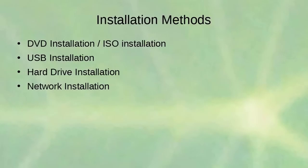There are several installation methods. A DVD installation is typical for physical machines. If using VirtualBox or VMware, you can use an ISO image — the virtualization software treats it as a real DVD. You can also do USB installations, hard drive installations if Linux is already on the drive, or network installations using a boot service.